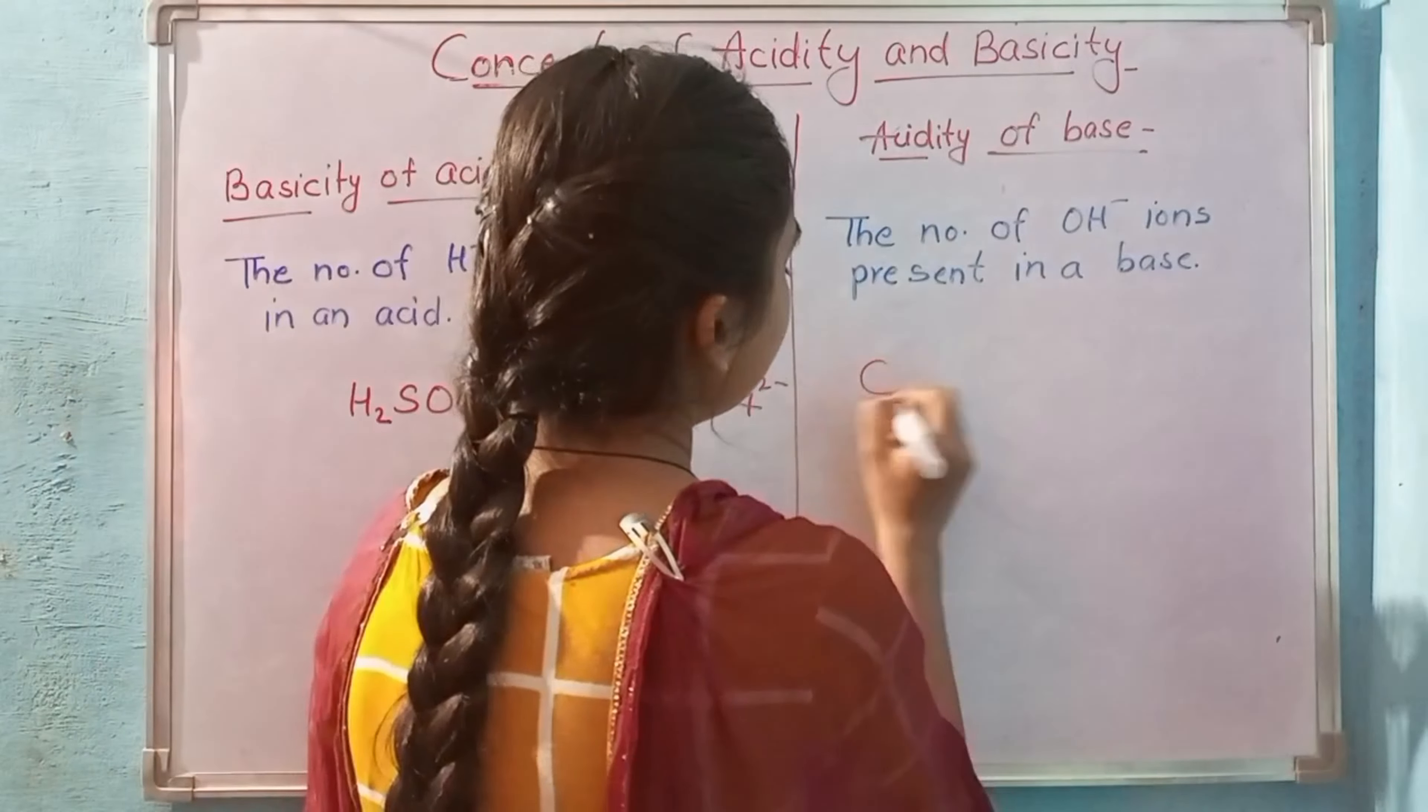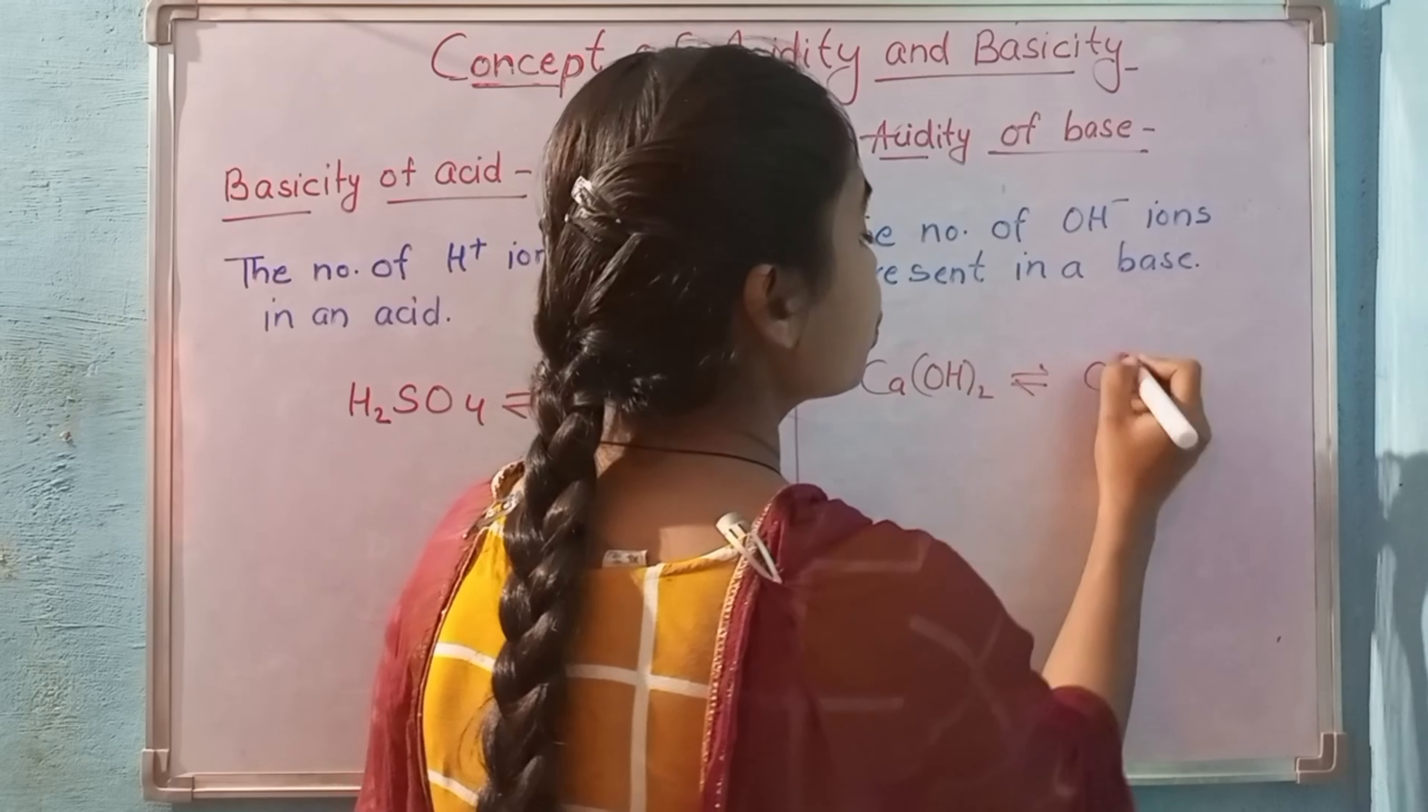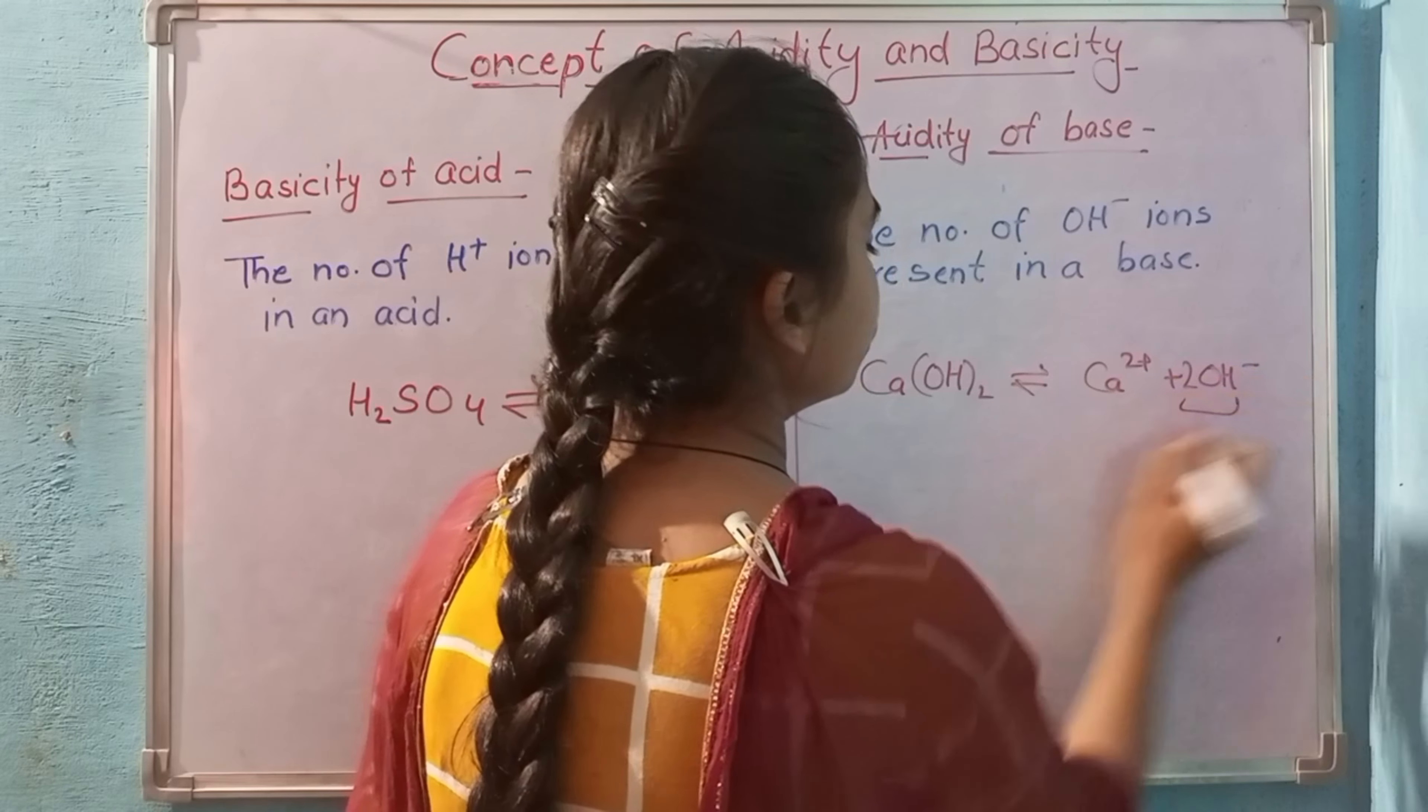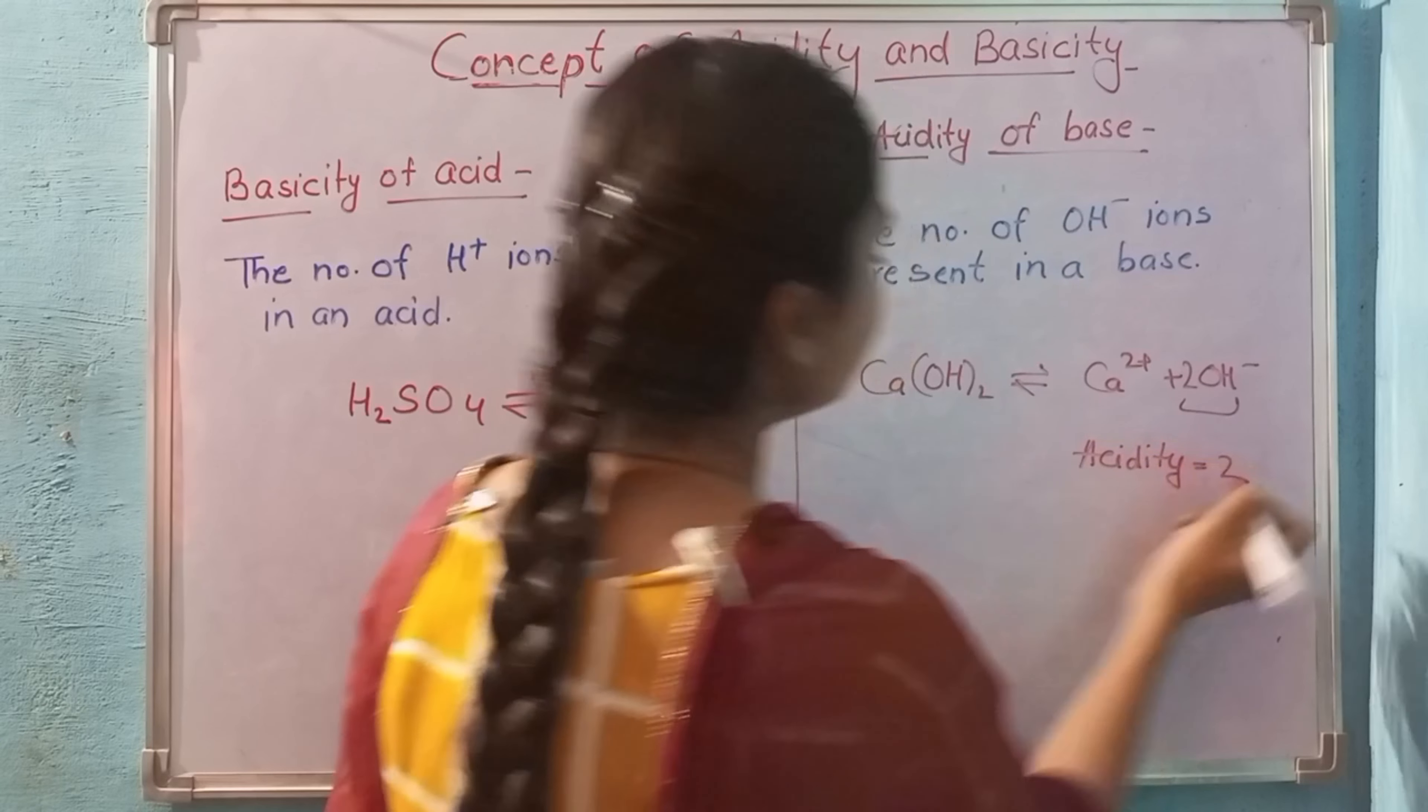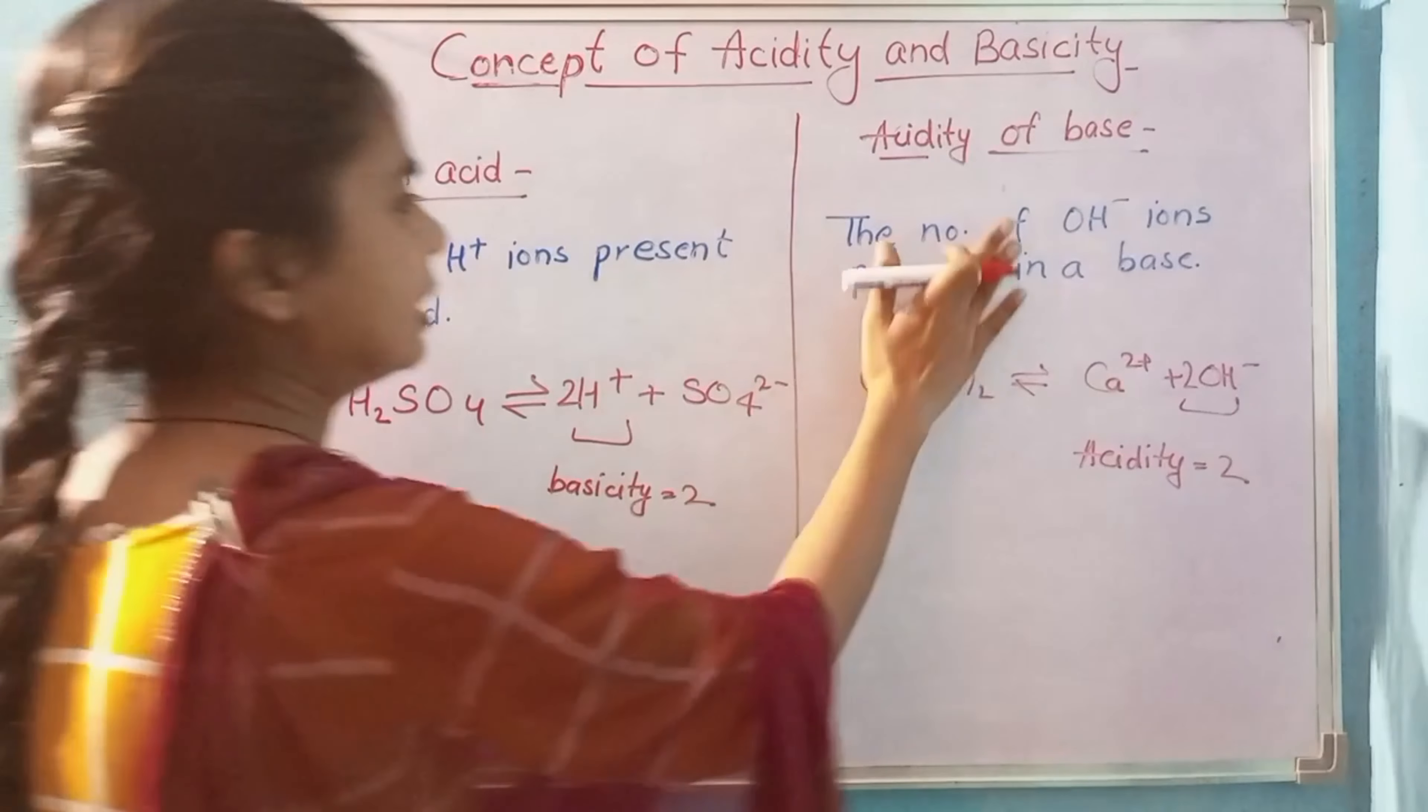Similarly, if I have taken an example here Ca(OH)2 and break it, then I get 2 OH ions here. How much will it be? It will be 2. Why will it be acidity and basicity? Because it is acid and it is base.